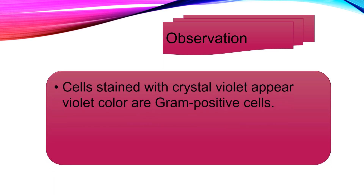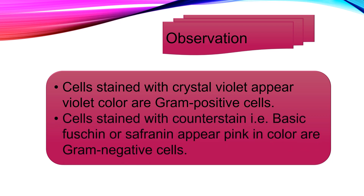Now let's see the observations. Cells stained with crystal violet appear violet in color and are Gram positive cells. So if we observe violet color cells, those cells are Gram positive cells. Cells stained with the counter stain, basic fuchsin or safranin, appear pink in color and are Gram negative cells. So if you observe pink color cells, those cells are Gram negative cells.